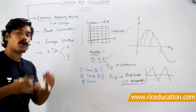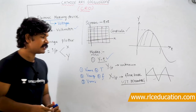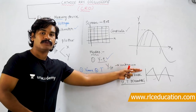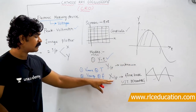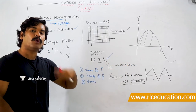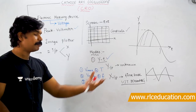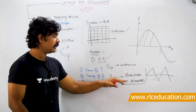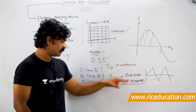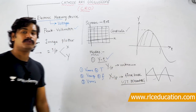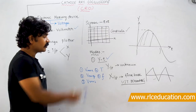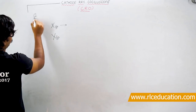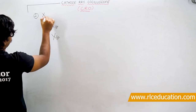In YT mode, you can measure only one unknown signal at any point of time. The X input is always given a known signal - the time base signal generated from the UJT relaxation oscillator. That is about YT mode.